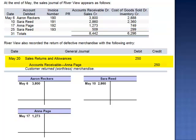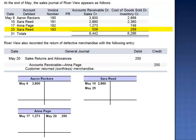On May 20th, Anna Page returns $250 of defective merchandise. This credits her account receivable for $250. May 25th, Sarah Reed is billed for $509.